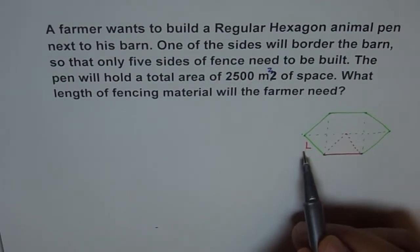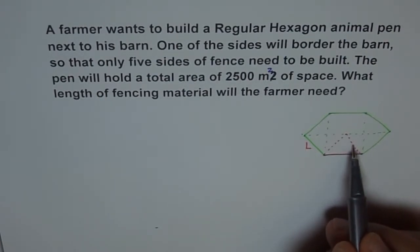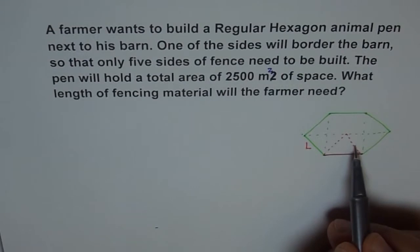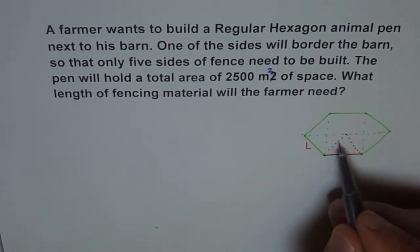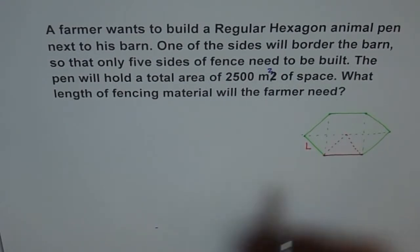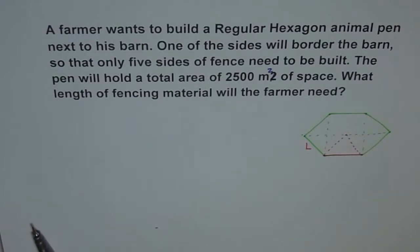If this length is L then this is also L and this is also L. Since this is an equilateral triangle, all sides are equal.